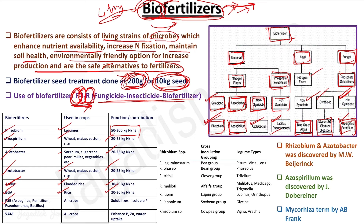Phosphorus-solubilizing biofertilizer (PSB) — Aspergillus, Penicillium, Pseudomonas, Bacillus — can be used in all crops and solubilizes insoluble phosphorus, since phosphorus fixation is a major problem in soil. VAM (Vesicular-Arbuscular Mycorrhizae) can also be used in all crops and enhances phosphorus, zinc, and water uptake in the plant.